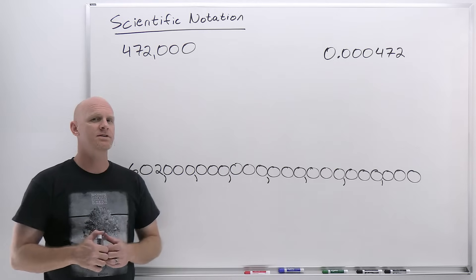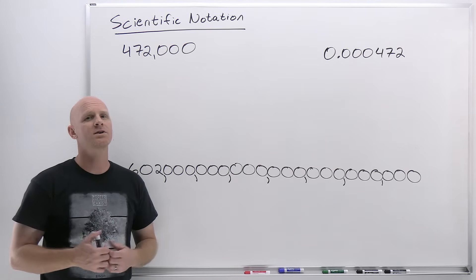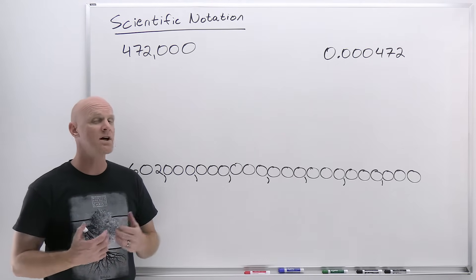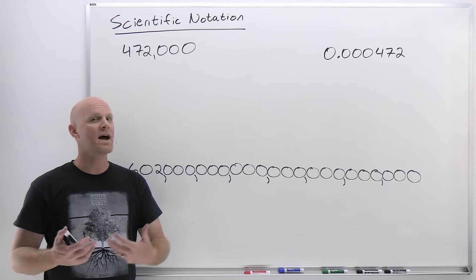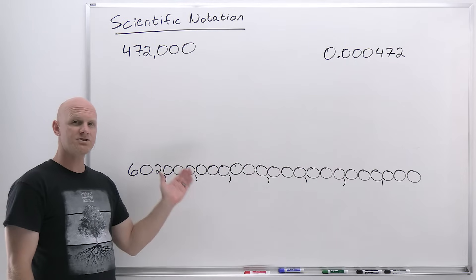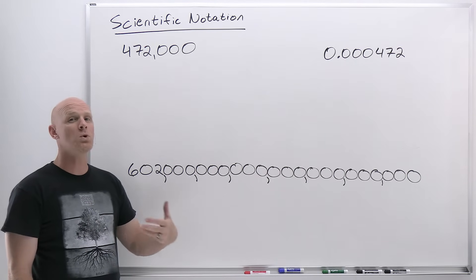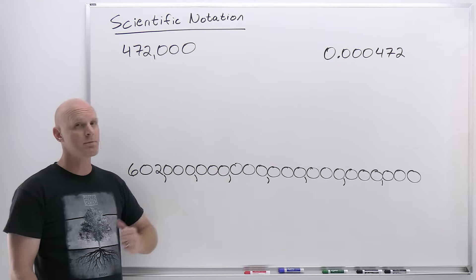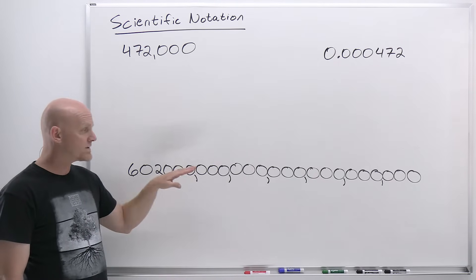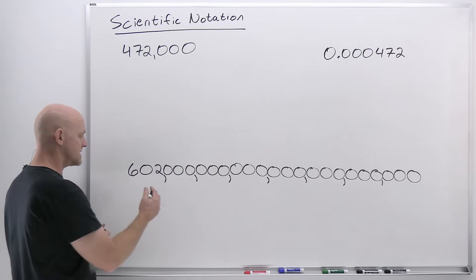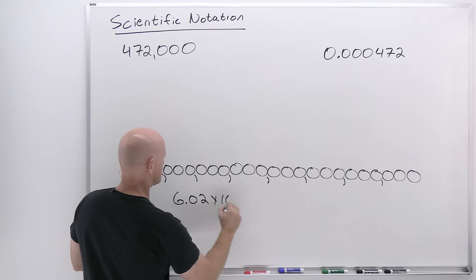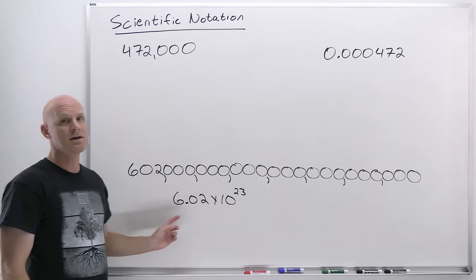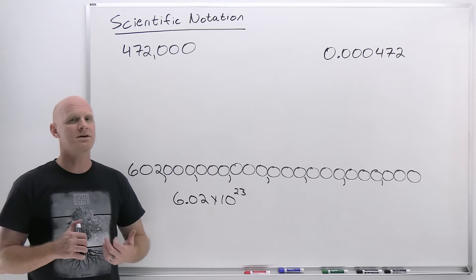Scientific notation is a convenient way to express either really small or really large numbers. Technically you can express any number in scientific notation, but that's where it has its real utility. You might recognize Avogadro's number from chemistry — the number of particles in a mole. It's a huge number and takes forever to write out. But with scientific notation, Avogadro's number is simply 6.02 × 10²³, which saves a lot of headache.